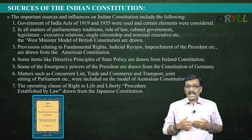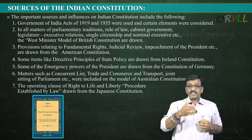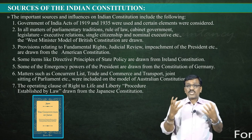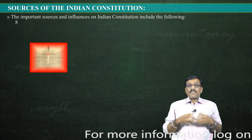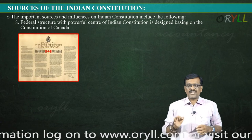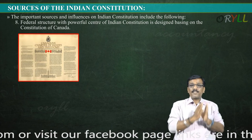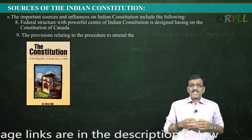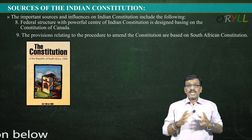The right to life and liberty — procedure established by law — is drawn from the Japanese Constitution, as Japanese people give great importance to peace and citizens' rights. The eight-point federal structure with a powerful center is designed based on the Constitution of Canada, which has a strong union alongside its states. The procedure to amend the Constitution is based on the South African Constitution.